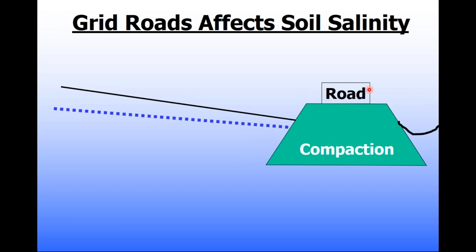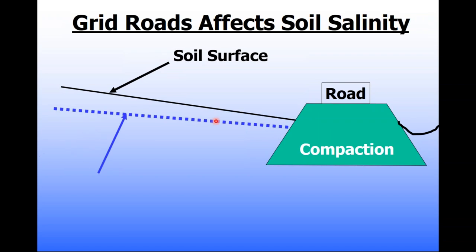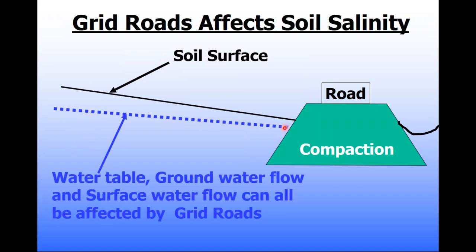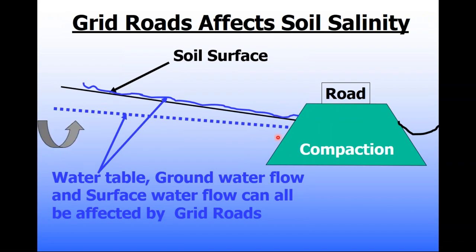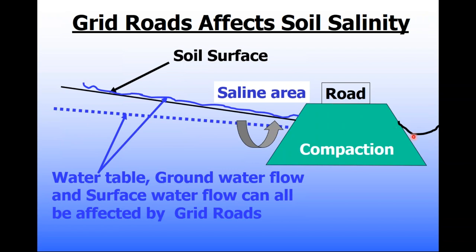Road construction is another human activity that has interfered with surface and groundwater and caused salinity problems along roads. When grid roads were built with compacted clay and raised grades, they interfered with groundwater movement and caused water to accumulate on the upslope side of the road, raising the water table close to the soil surface. Even in the borrow pits on either side of the road, water can sit for extended periods, develop a water table, and we'll see small bits of salinity on either side of these grid roads — quite common across the southern prairies.